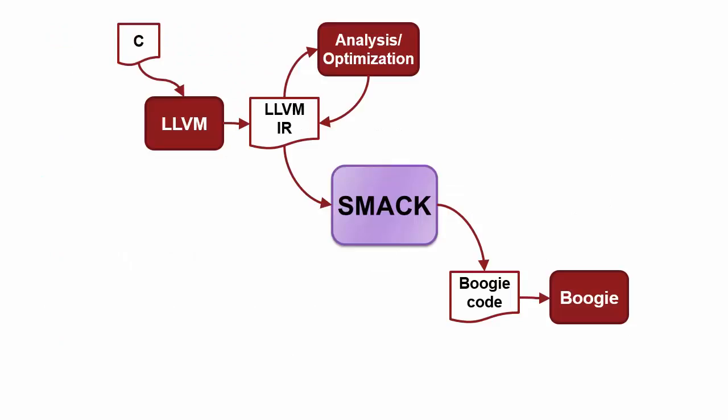Now we'll take a look at the organization of the SMAC tool. The front-end compiler generates LLVM-IR, which is passed to SMAC and translated into Boogie. This Boogie IVL is then passed to the back-end verifier.